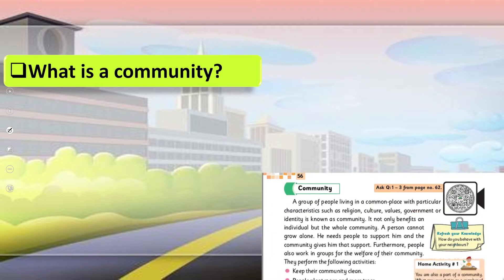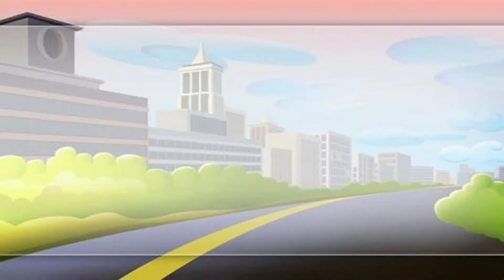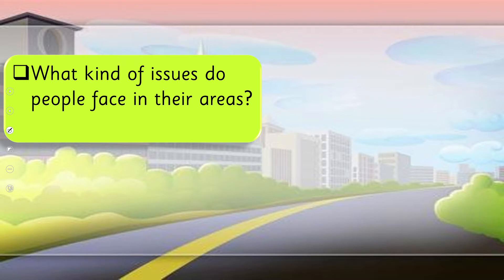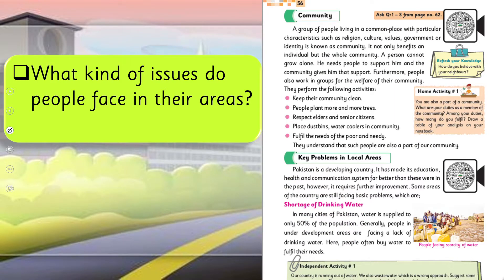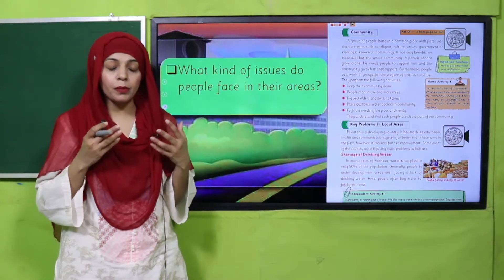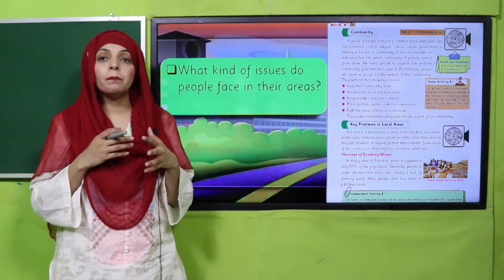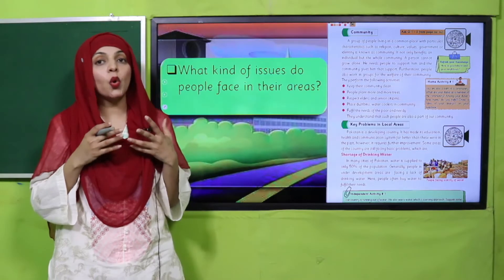When we started lecture number one, we discussed what is a community on page number 56. We also discussed the key problems in the local area — what kind of issues do people face in their area. On pages 56 and 57, we discussed shortage of water, pollution, poor sewage system, no proper education system, and poor healthcare system. These are some of the problems faced in the local areas of Pakistan.